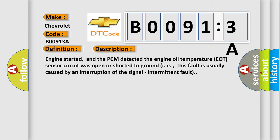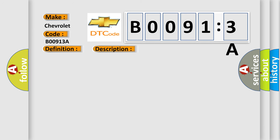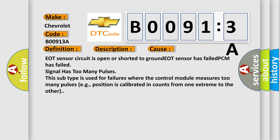This diagnostic error occurs most often in these cases: EOT sensor circuit is open or shorted to ground, EOT sensor has failed, PCM has failed, signal has too many pulses. This subtype is used for failures where the control module measures too many pulses, for example, position is calibrated in counts from one extreme to the other.